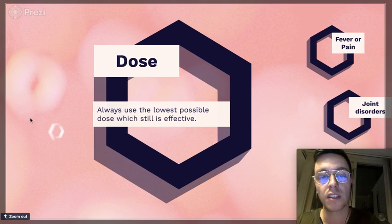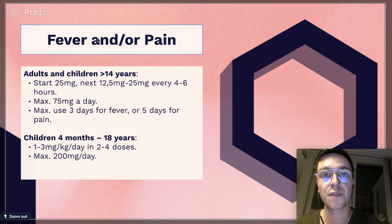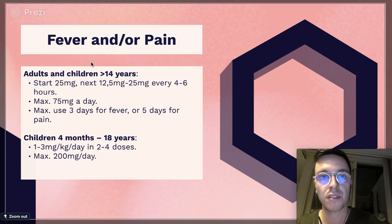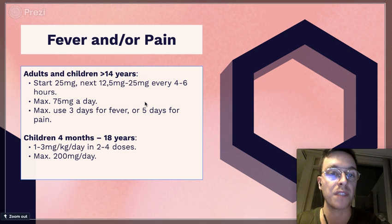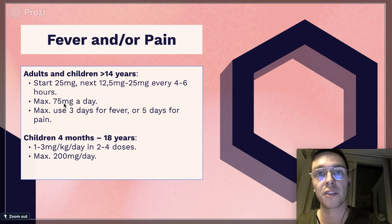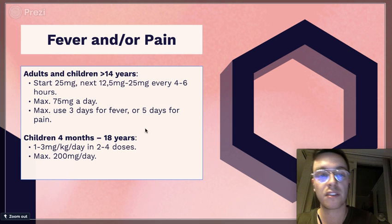If you're looking at the dose, it's always best to use the lowest possible dose which still is effective to minimize possible side effects. If you use Diclofenac for fever and pain and you don't have it on prescription but just bought it at the pharmacy yourself, you're an adult or a child older than 14 years, you should start with 25 milligrams and your next dose should be 12.5 or 25 milligrams and continue this every four to six hours if necessary to a maximum up to 75 milligrams a day. You can maximally do this three days for when you have a fever or five days for when you have pain. If you still need Diclofenac after three or five days, contact your doctor for the right approach.